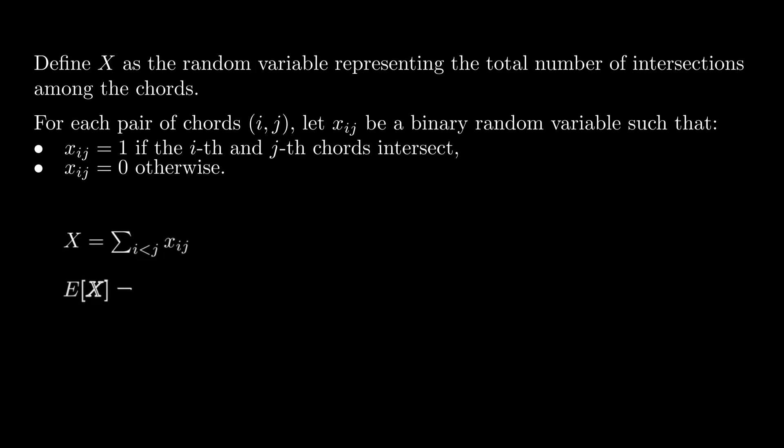Now by linearity of expectation, E[X] is equal to summation of E[xij]. Since xij is an indicator variable, its expectation is equal to the probability that chords i and j intersect.